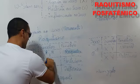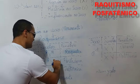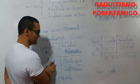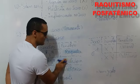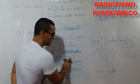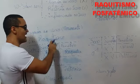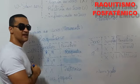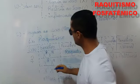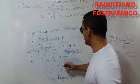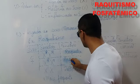Ela sendo X com alelo dominante R e X com alelo dominante R — ela será também raquítica. Por quê? Porque o gene R é dominante para o raquitismo, então ela será raquítica.